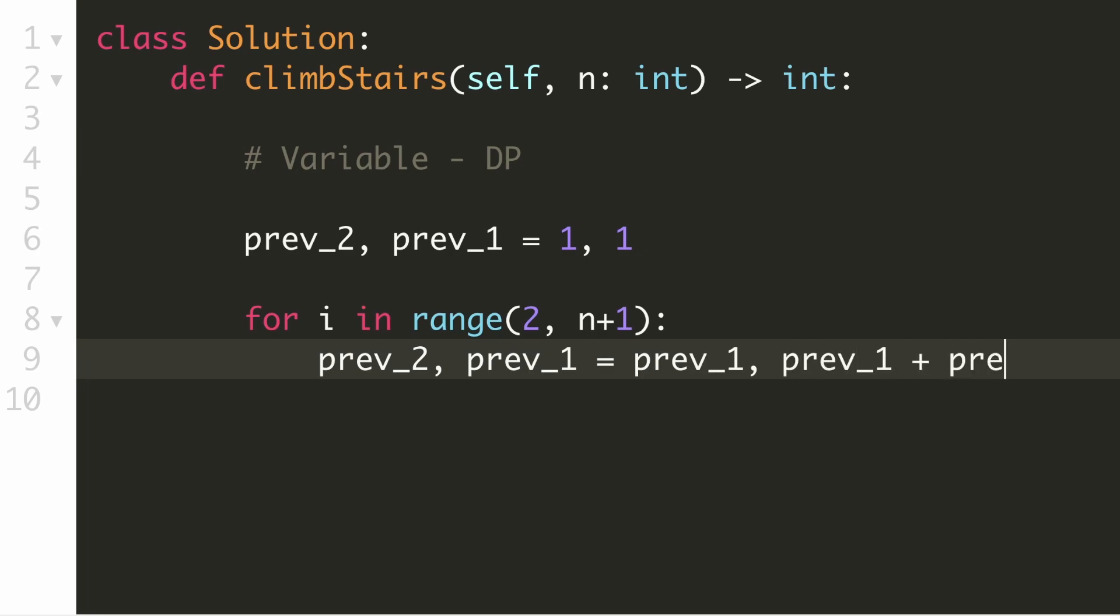For our next position, its second previous result will be the immediate previous result for our current position. And its immediate previous result will be our current result, which is the sum of these two previous results. And once we are done calculating the result for these n positions, the last computed result will be the result for our final position and it will be stored in the immediate previous result.